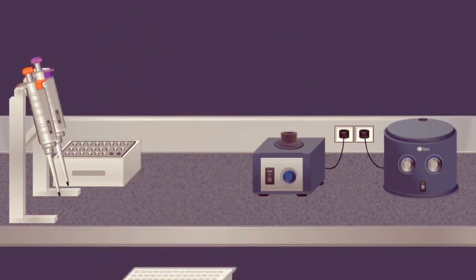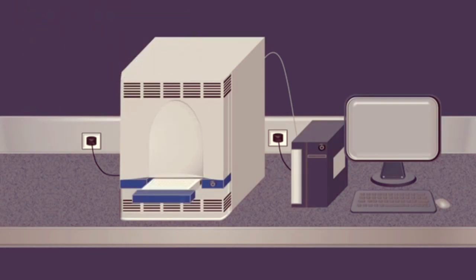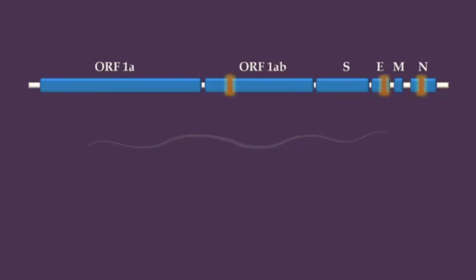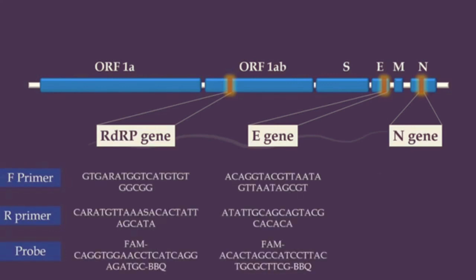Next, the plate is placed in a PCR machine, which is essentially a thermal cycler. Real-time RT-PCR is used for the detection of the new coronavirus 2019, by the amplification of target sequences in the RdRp gene, the E gene and the N gene. The choice of the target gene depends on the primers and the probe sequences.